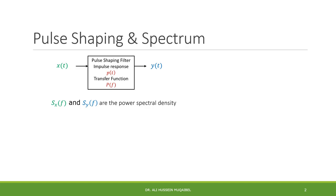Before we go into the details, let's make sure some basic signals and systems concepts are clear. Here we have a system with an input x(t) in time and an output y(t). In the time domain, we represent the system using the impulse response. In the frequency domain, we use capital X(f) or X(ω), which is the Fourier transform of the input signal, and we get the output capital Y(f). So sometimes we're given the input in time or frequency and we'd like to get the output in time or frequency.